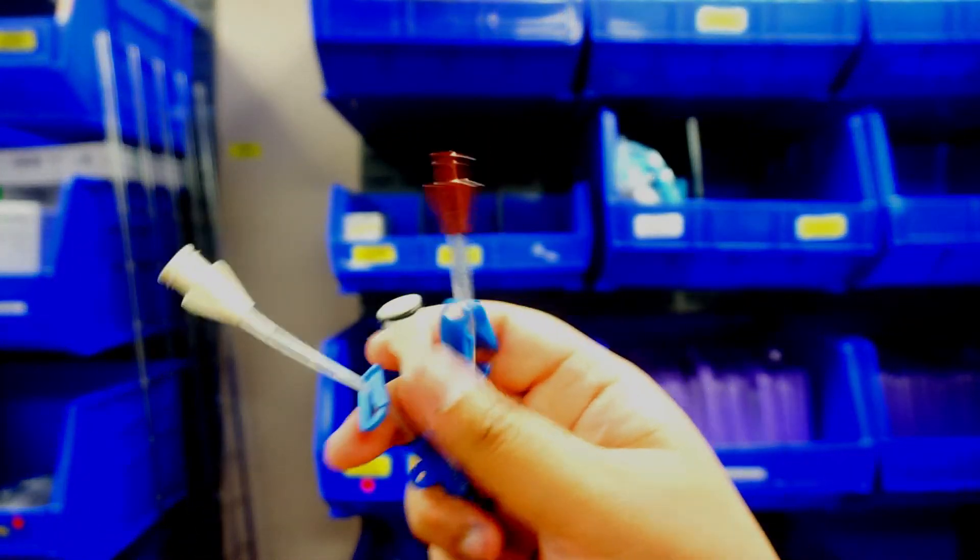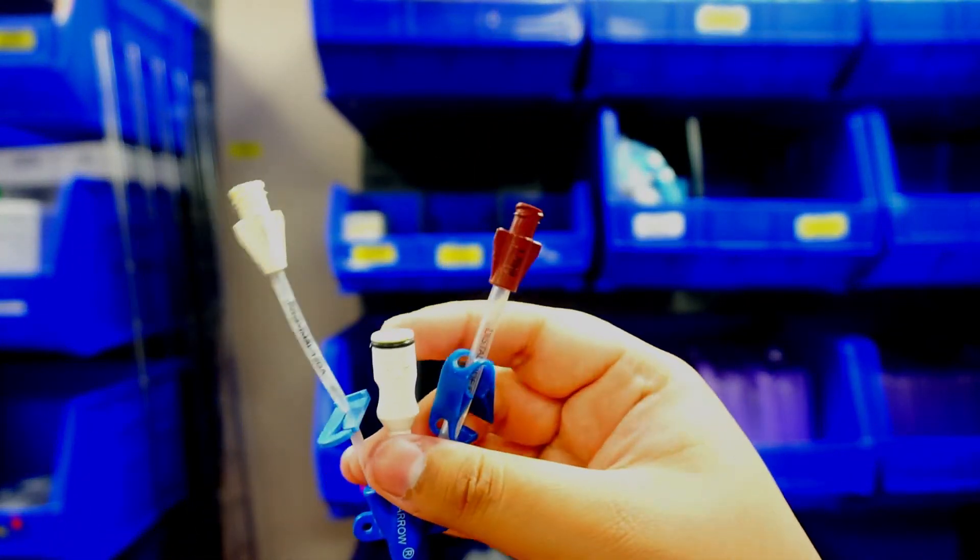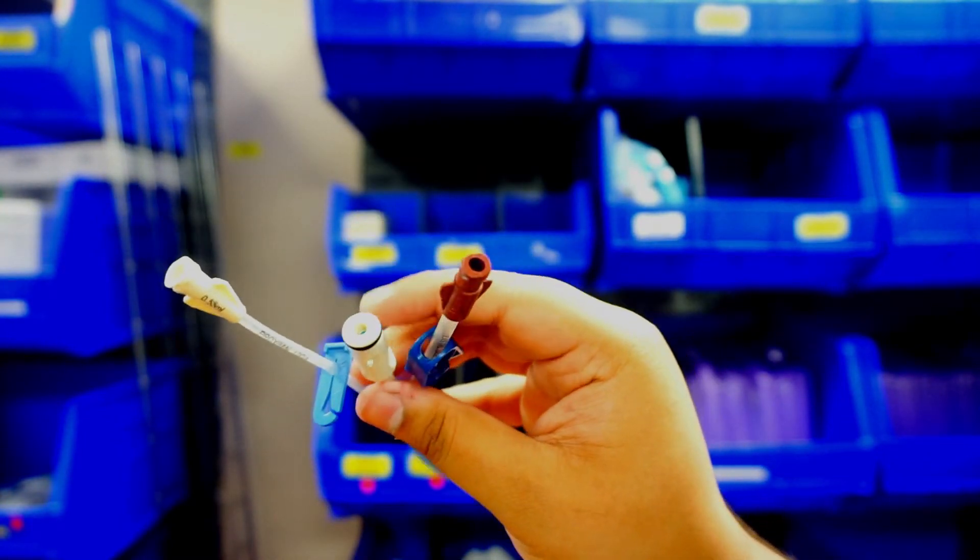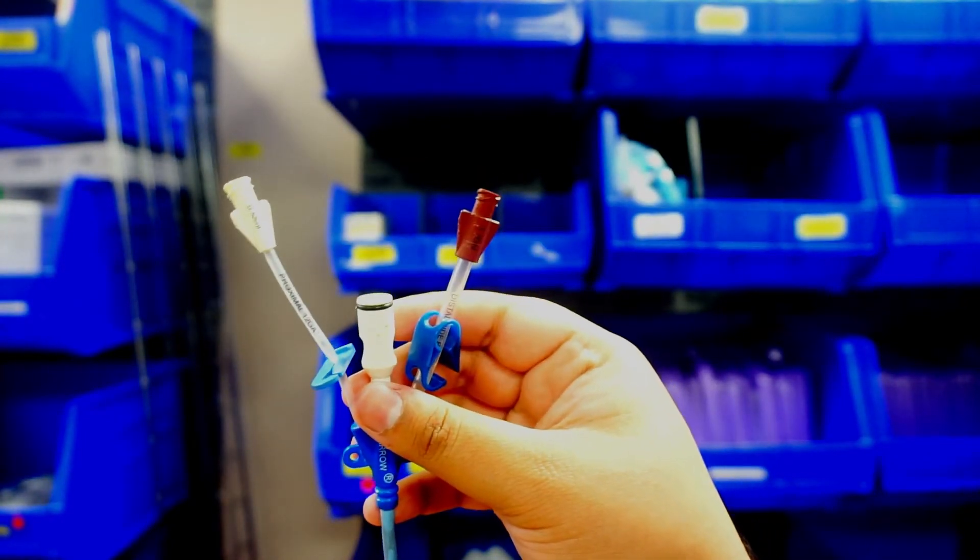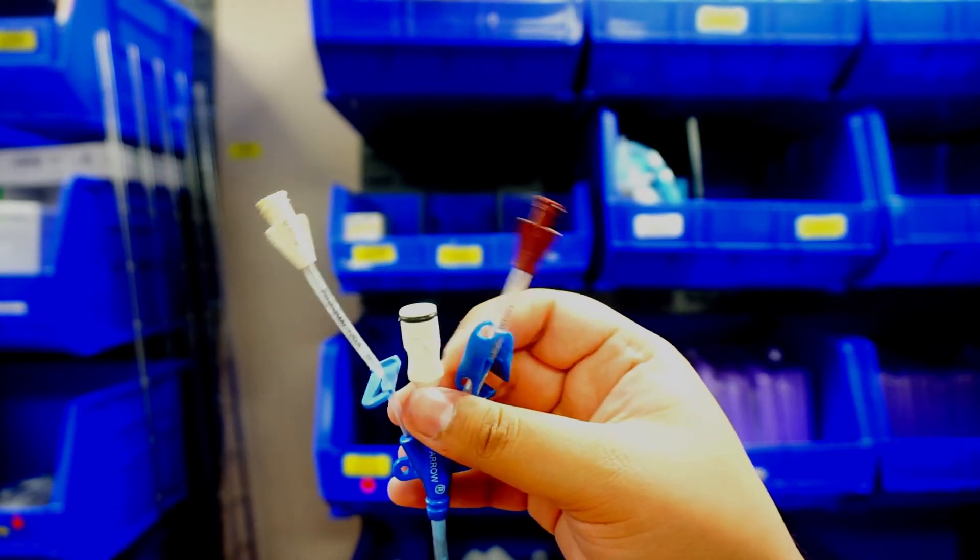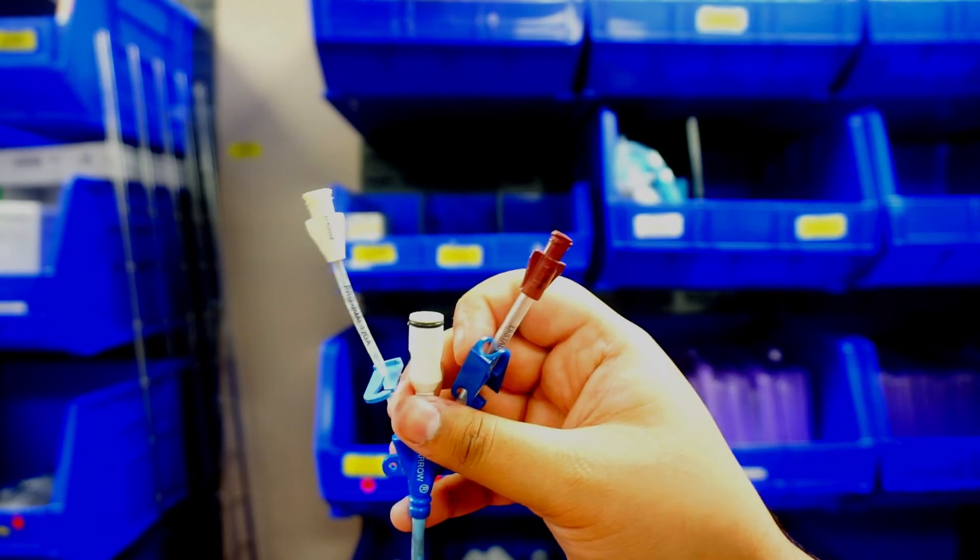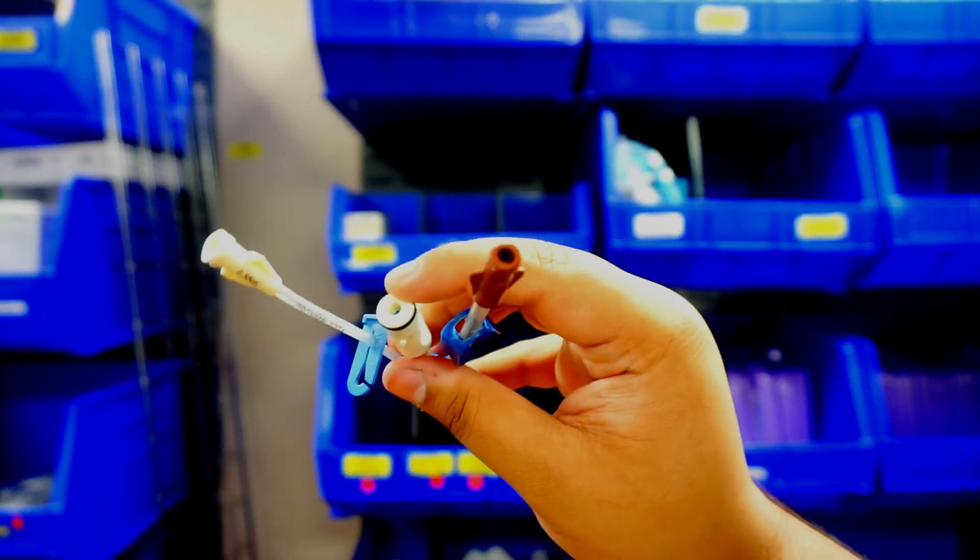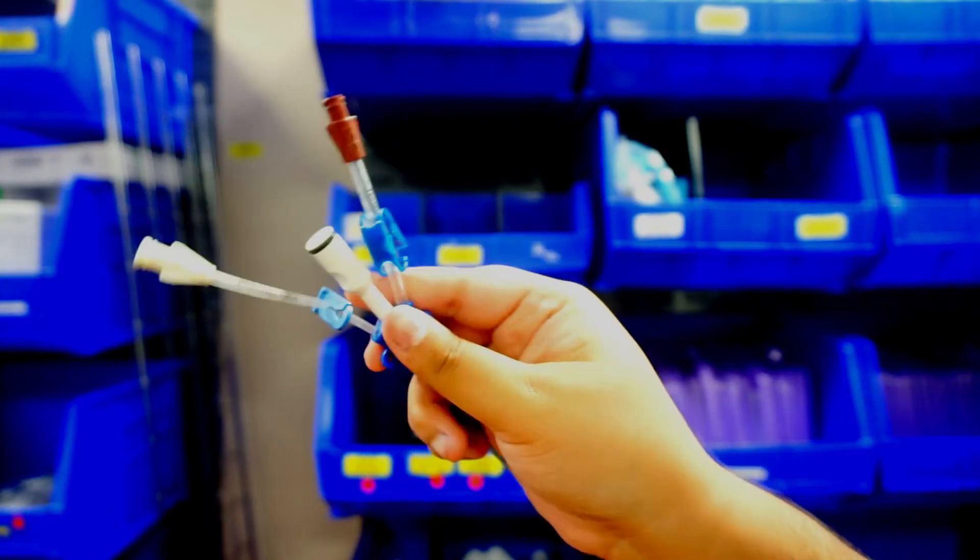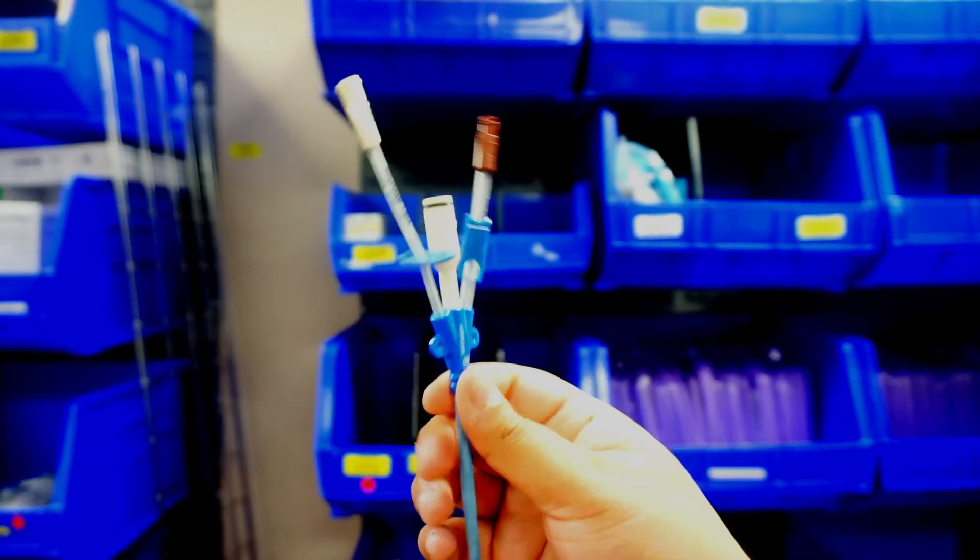And this end here, you're going to go ahead and redress it if you have to put a Tegaderm over this end. There are caps that come in the Cordis setup, but we do not have those caps. So put a Tegaderm over and that's going to keep any air from going in through this hole into your line. And that's pretty much it. Then you're just going to have your Cordis in place.